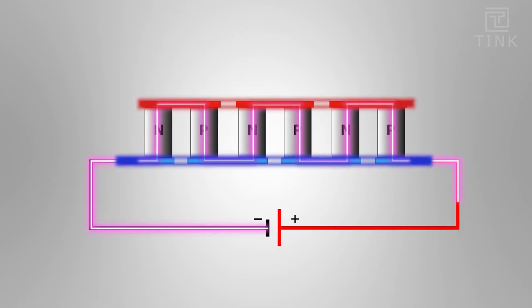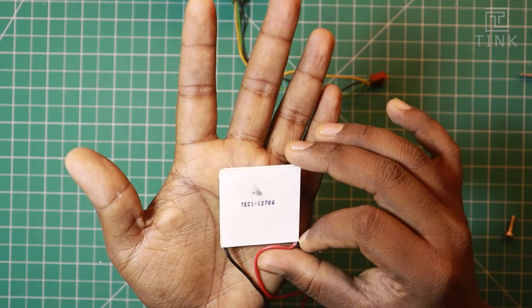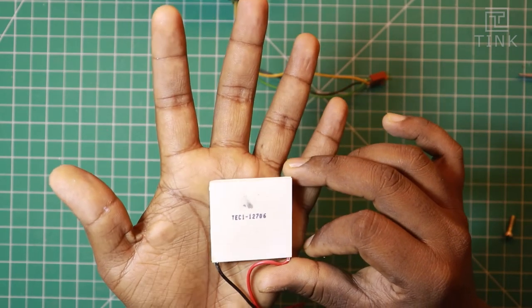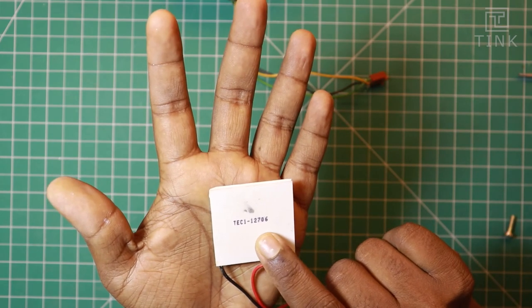As we add more thermocouples we need to arrange them electrically in series like I have shown you on screen. The first three numbers on the Peltier module represents the number of thermocouples present inside it. So there are 127 thermocouples in this particular module.